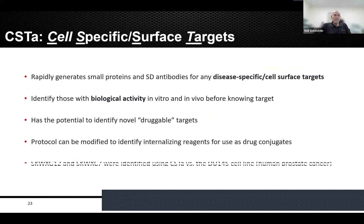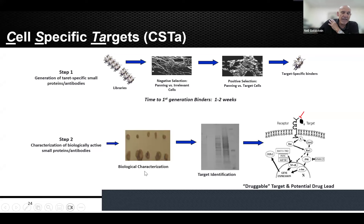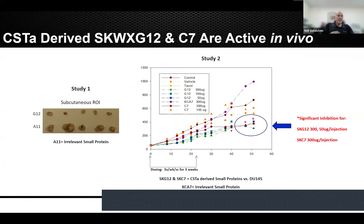Let me quickly go through another approach we call SASTA, which I still use now for cell-specific or cell-surface targets. We use our libraries and do negative selection against irrelevant cells — for example, if I'm looking for antigens expressed only on pancreatic cells, I'll pan against normal cells, prostate cancer, breast cancer, etc., and identify target-specific binders. The beauty of this technology is that we can identify small proteins or antibodies with biological activity because we set up the assay prior to knowing what the target actually is — biological characterization first, then target identification.